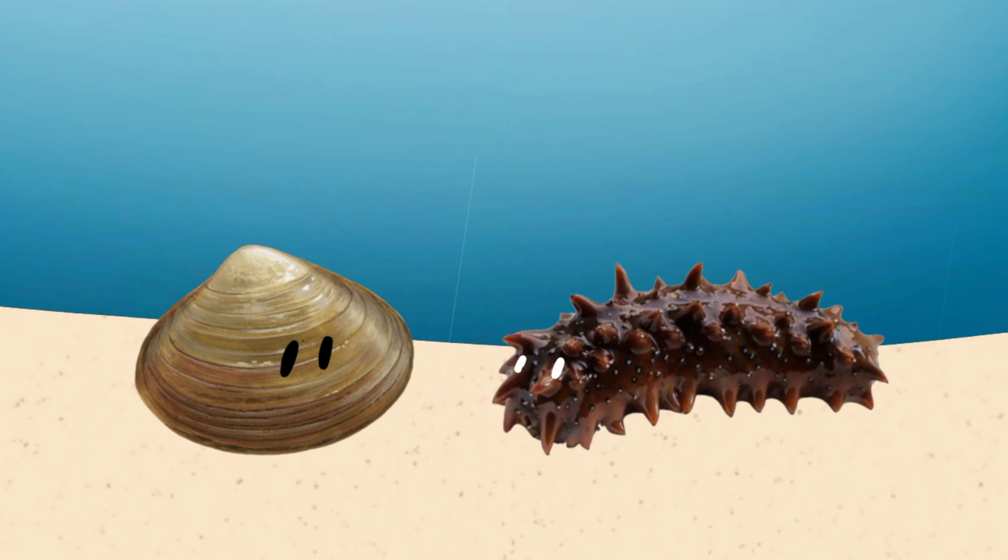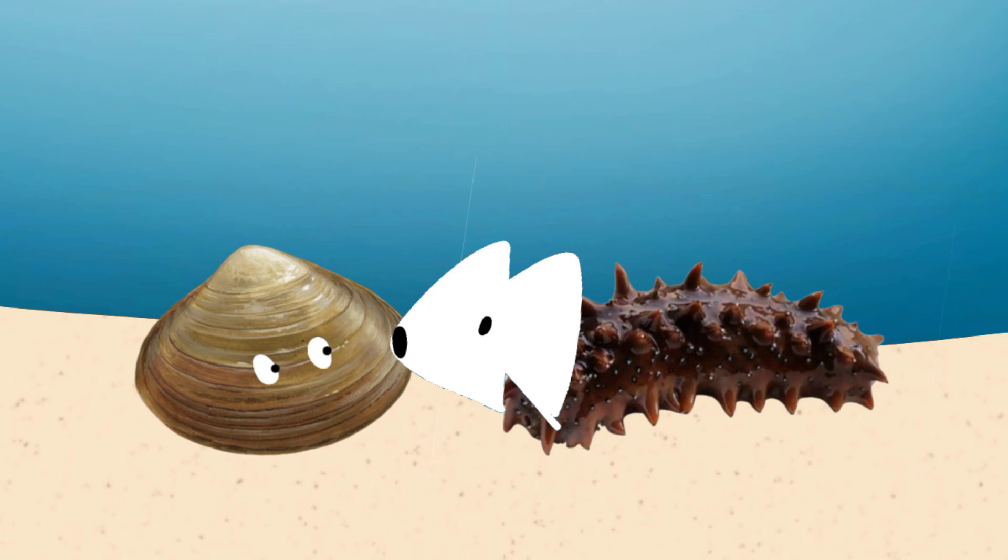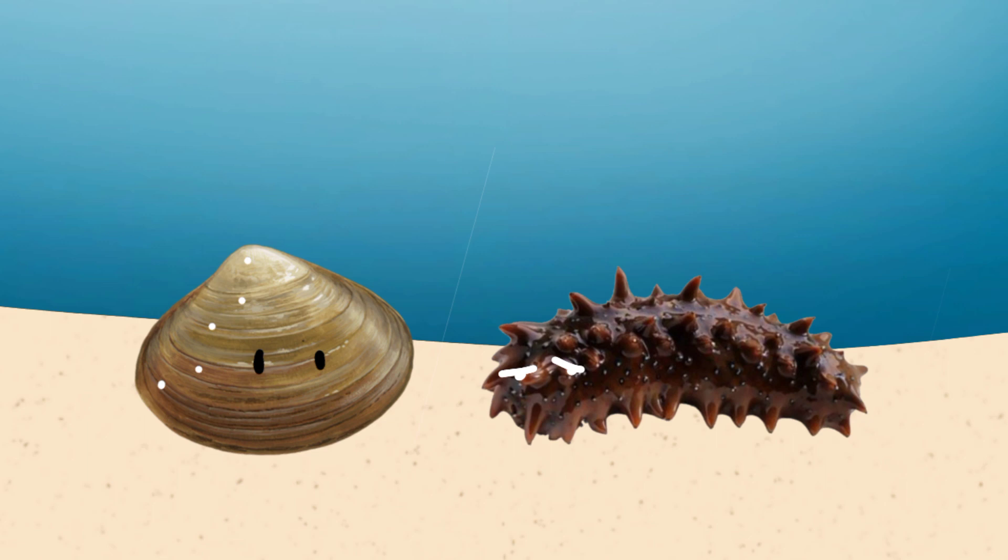The sea cucumber looks over to the mollusk. He doesn't really look, he sort of glances. Actually, he was in the middle of a sneeze. That's the important thing, because you've got to imagine the sea cucumber sneezing. So he sneezes, and then, the way you do when you sneeze, your head sort of turns accidentally somewhere. So he looks over to the right and he sees the mollusk.